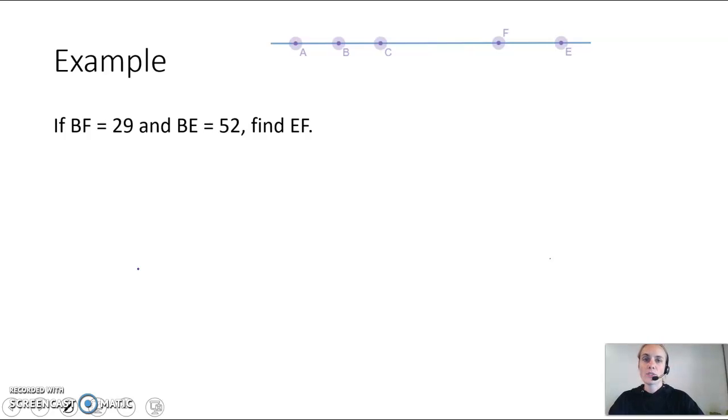If BF is equal to 29, so I'm going to go ahead and connect B and F, and that is 29. And we are told that BE is 52, so that's 52. Find EF.